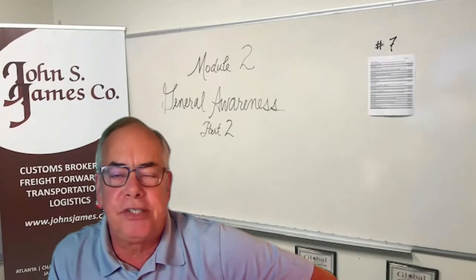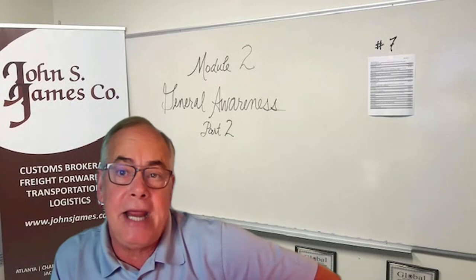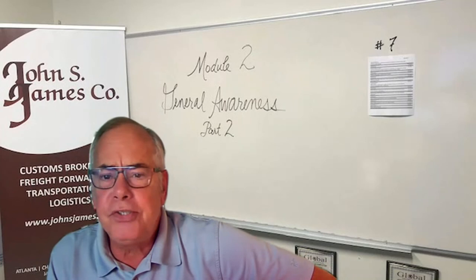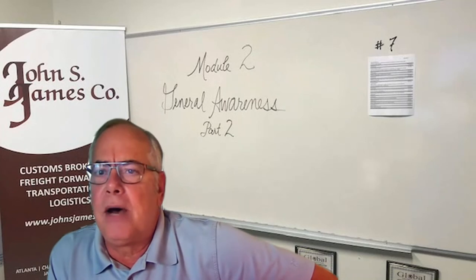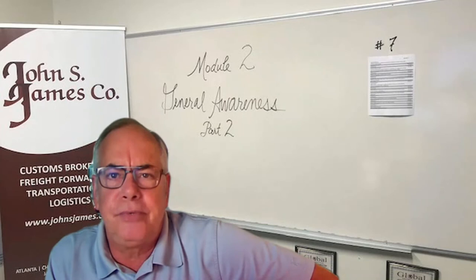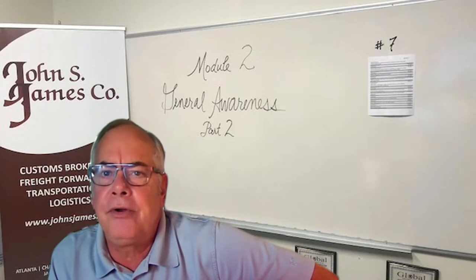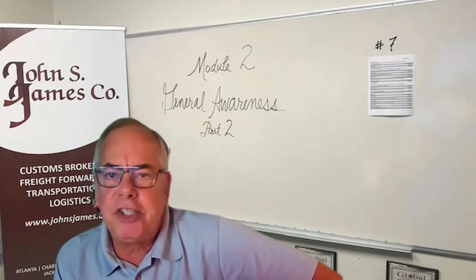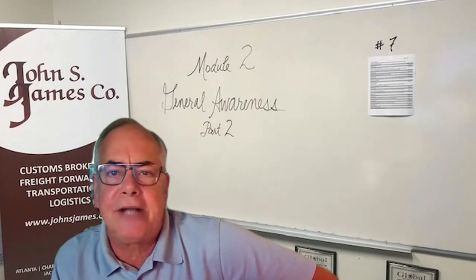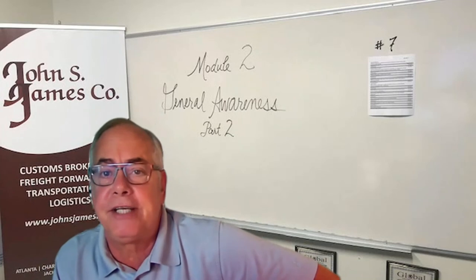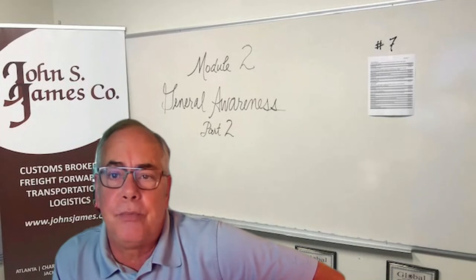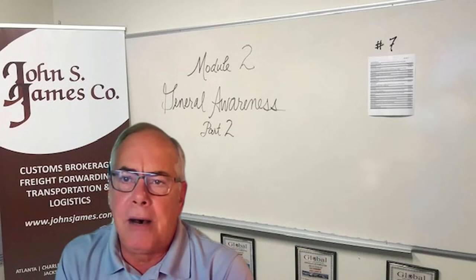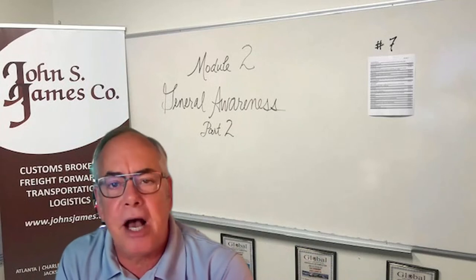One is exhibit number seven on penalties and exhibit number eight on online training. Today we're going to concentrate on where the resource material comes from, and you need to know about the responsible parties — who is responsible for what from the time the goods are manufactured until they're received at their final destination.